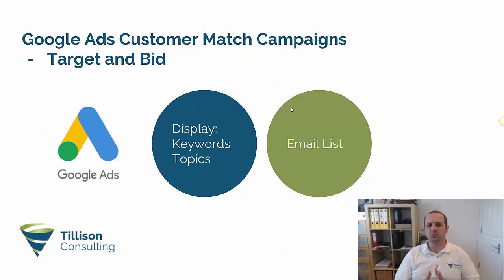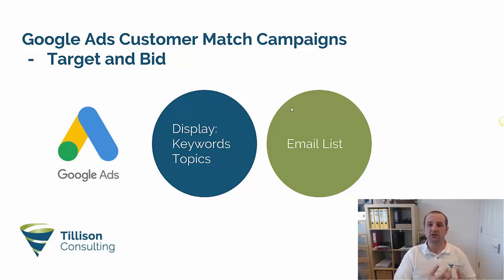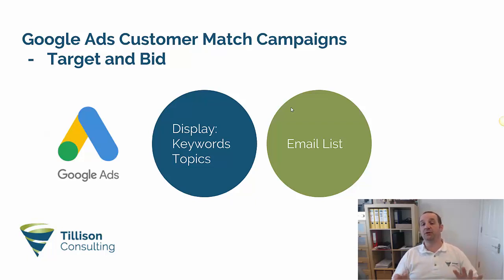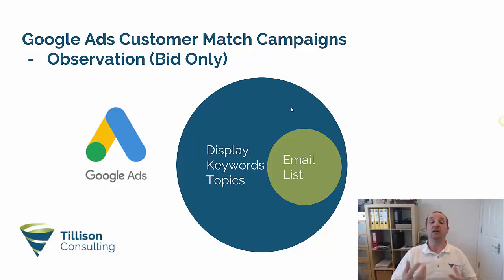The next one is Google Display. We can target content across the web for particular keywords - so if you're selling televisions, you might target Sony TV, Samsung TV, and Google will match your ads to content featuring those keywords. Or you can go broader and target topics, in-market audiences, things like that - people who are in the market for a TV - but only when those people are also in your email list. And then you can do the same observation approach, targeting everybody reading content about your topic but increasing the bids for your email list because they're more valuable to you.